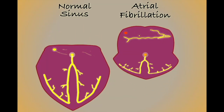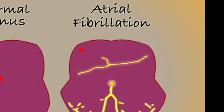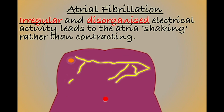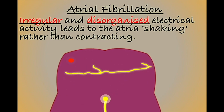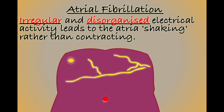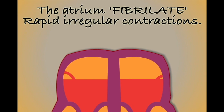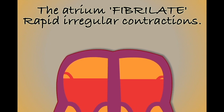In contrast, during AF, electrical impulses surge through the atria in waves of irregular disorganised activity. In response, the cardiac muscle shakes rather than contracts. This shaking is referred to as fibrillation.